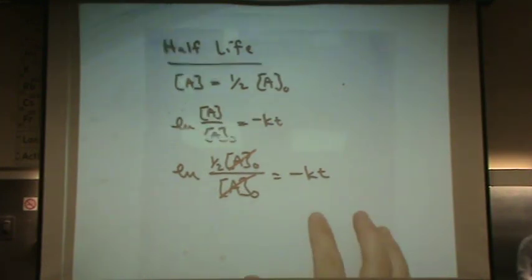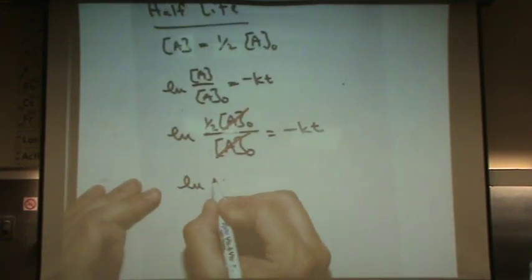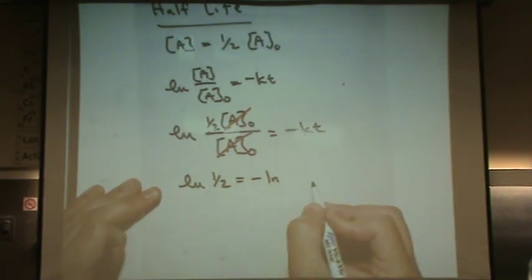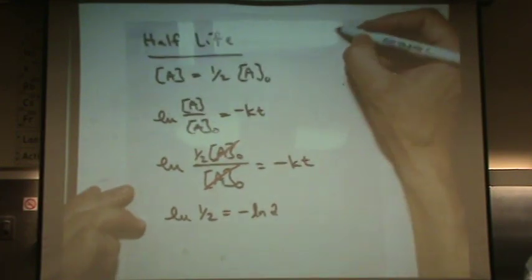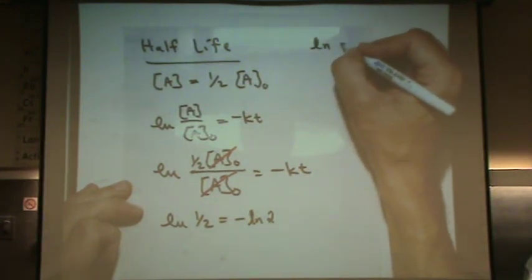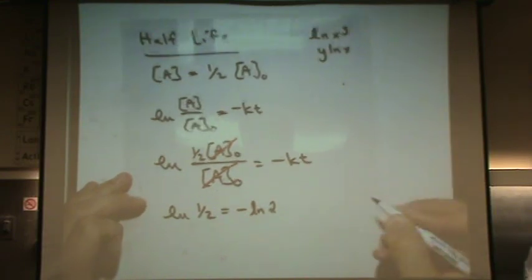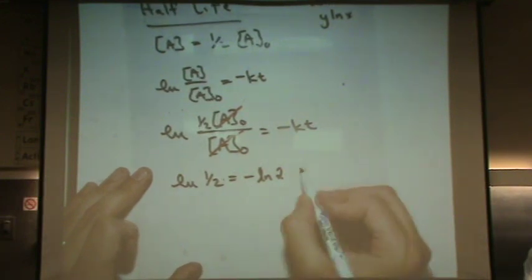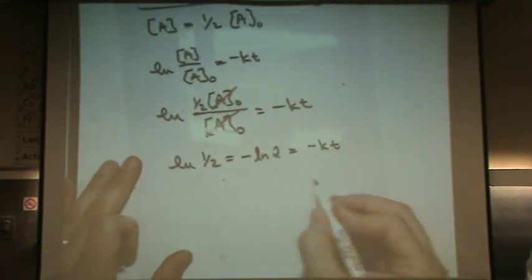This is going to be the natural log of one half or minus the natural log of what? Two. Okay. Natural log or log of x to the y is y natural log x. So I just, this is two to the minus one power, so you bring the minus one out. Equals minus kt. Or let's solve for t.